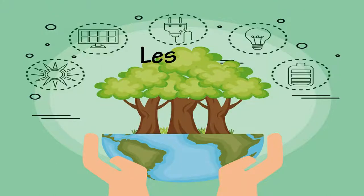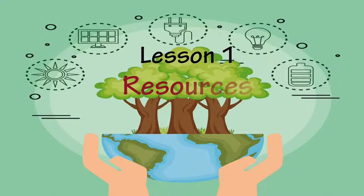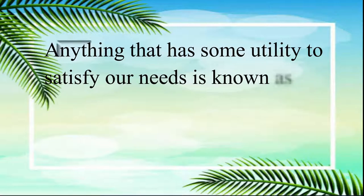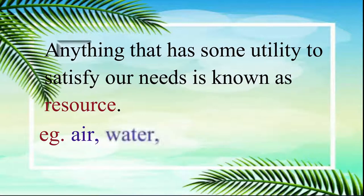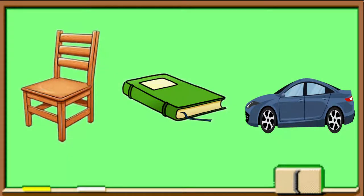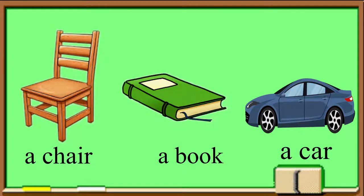Let us go through the main points of the lesson. Resources: anything that has some utility to satisfy our needs is known as a resource. For example, air, water, food, metals. Let us look at this picture. It shows a chair, a book, a car.